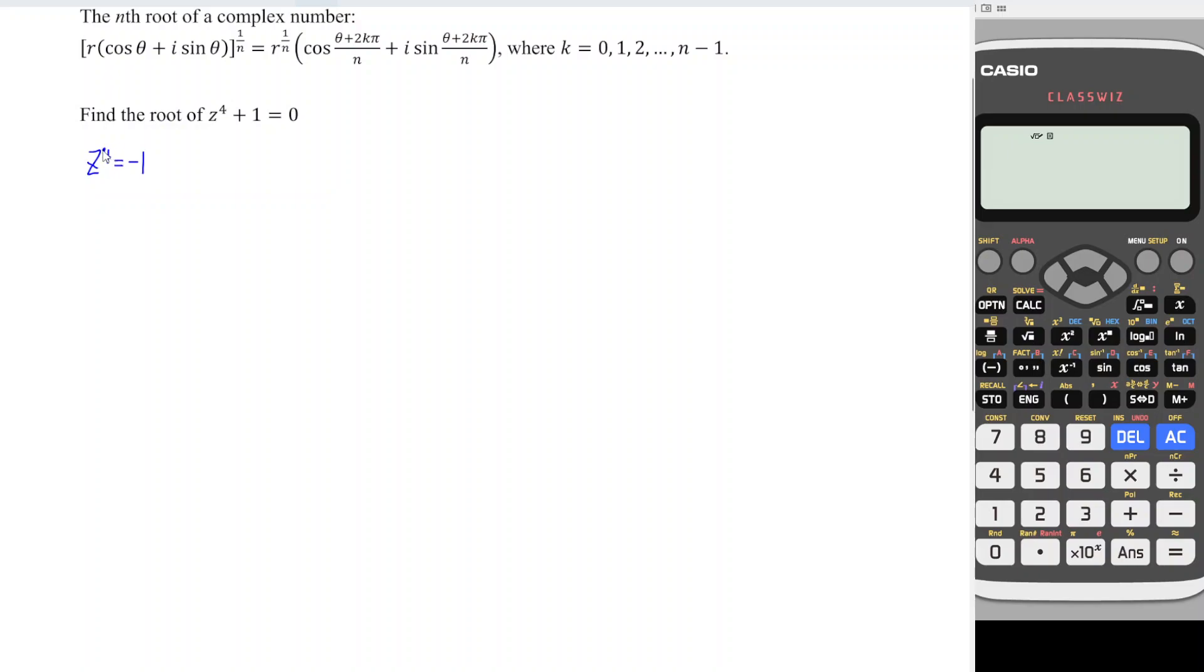As we can see, for any even power, we shouldn't have negative value, which means that this definitely will obtain complex root. So what we have to do here, we can let w be equal to negative 1 and we express w in trigonometric form.